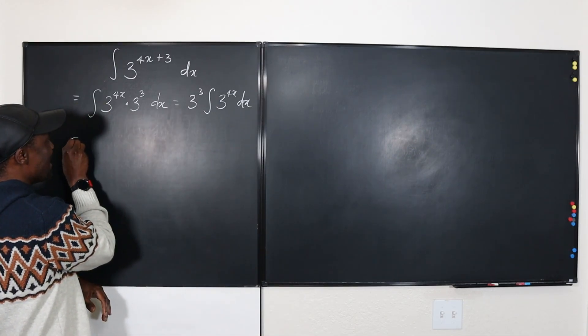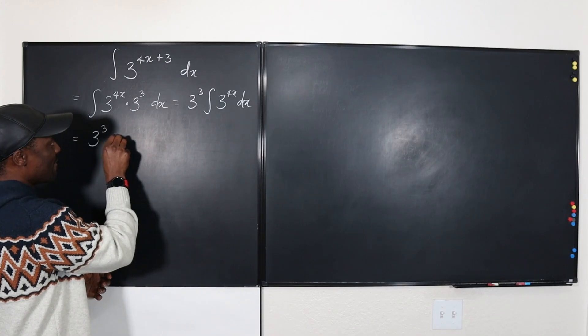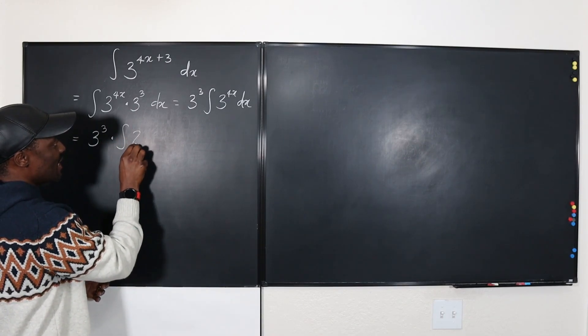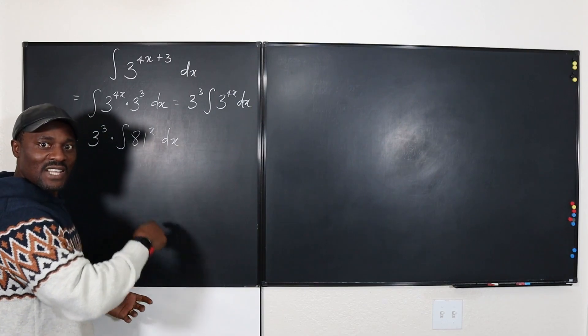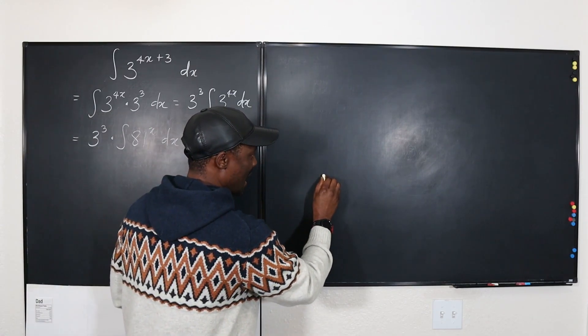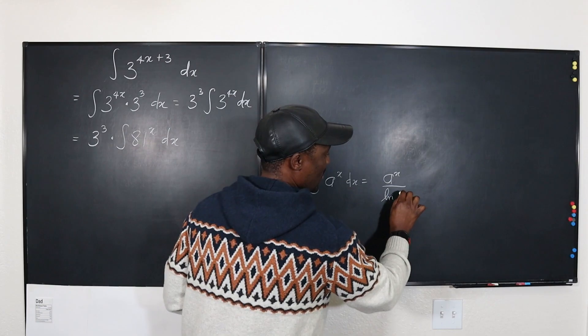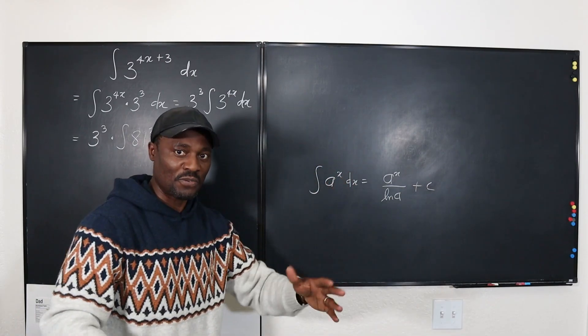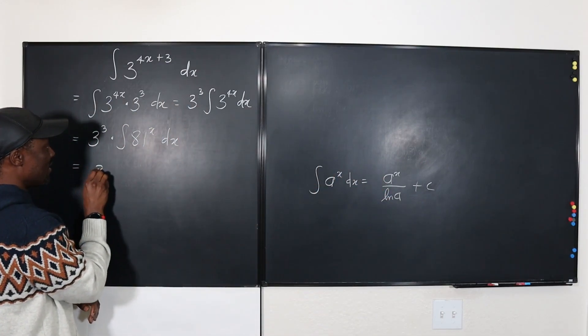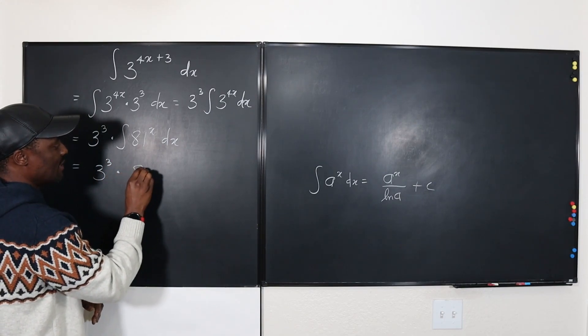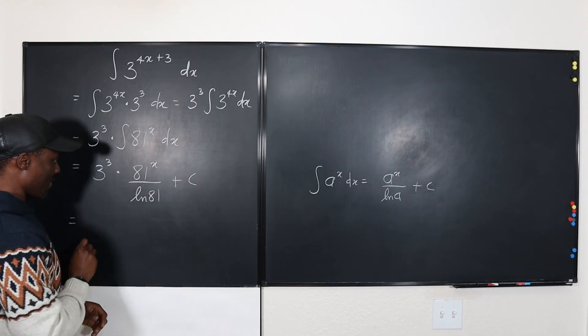This is the same thing as 3 to the third which I can write as 27, multiplied by the integral of 81 raised to power x dx. You can take the anti-derivative of this. Remember that the integral of a to the x dx is always equal to a to the x over the natural log of a plus c. This is something you know from your calculus 1.